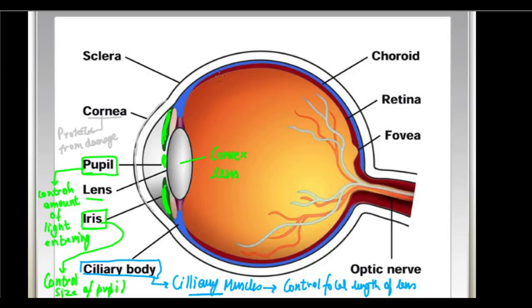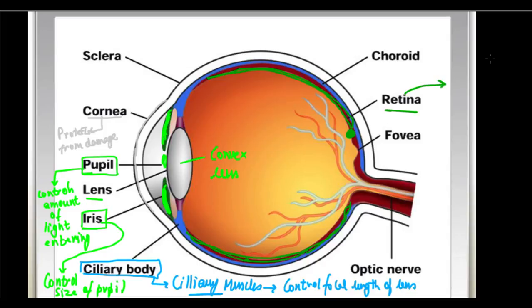If we go to the back part of the eye, there we will see a particular layer which acts as a screen to receive the light that enters the eye. This is called the retina — it is the back part of the eye which receives the refracted light rays. It acts as a screen where the light rays come and converge.